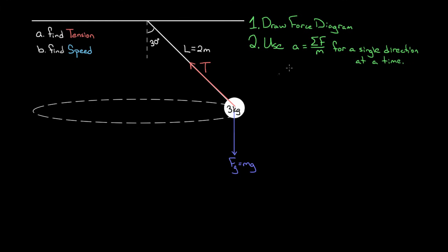I'm going to choose the vertical direction. I'll say the acceleration in the y direction equals the net force in the y direction divided by the mass. The acceleration in the vertical direction is not 9.8 — that's only if the ball were free falling. This ball isn't changing its vertical height; it's remaining at a constant height. So there's no vertical velocity and no vertical acceleration. The left-hand side equals zero.